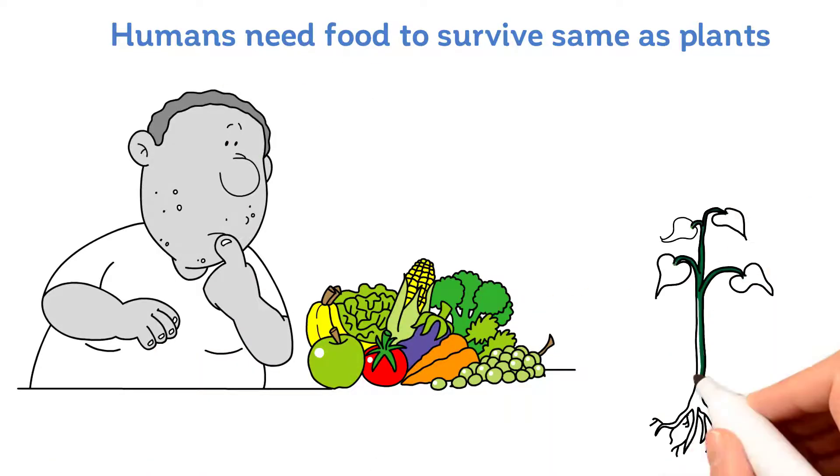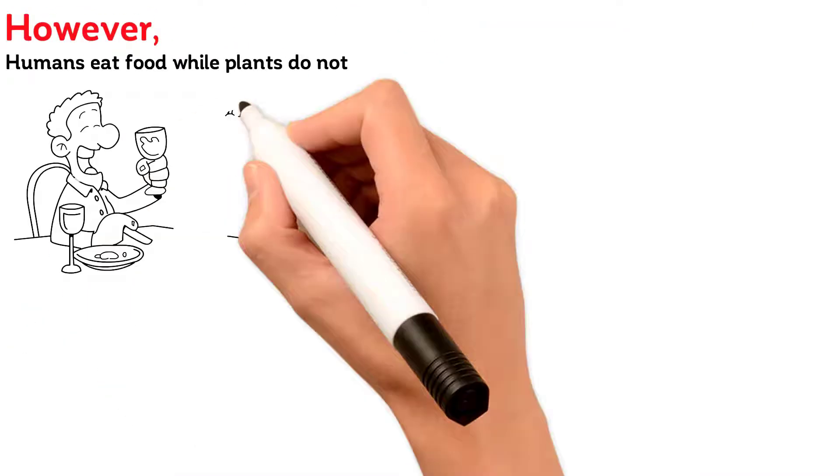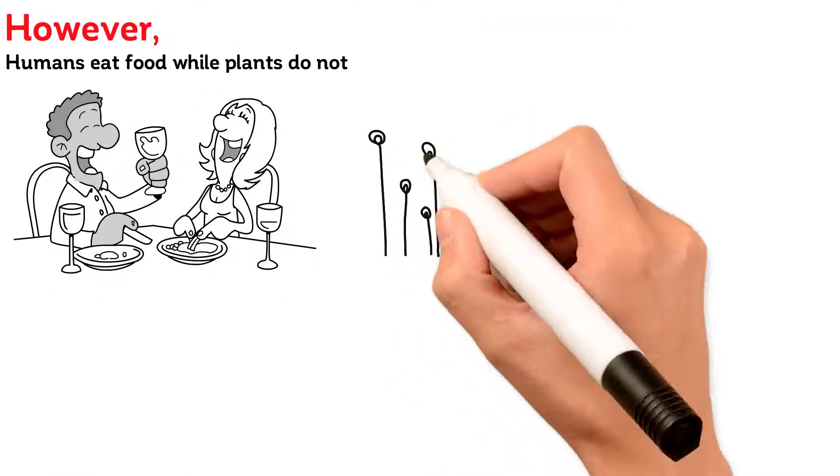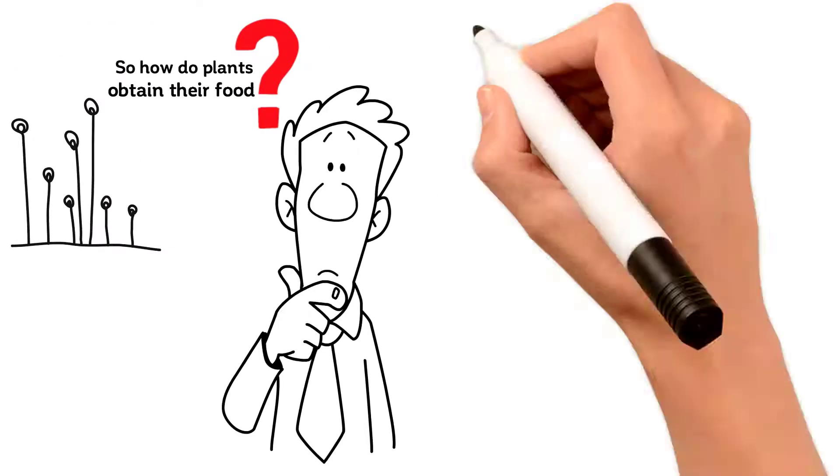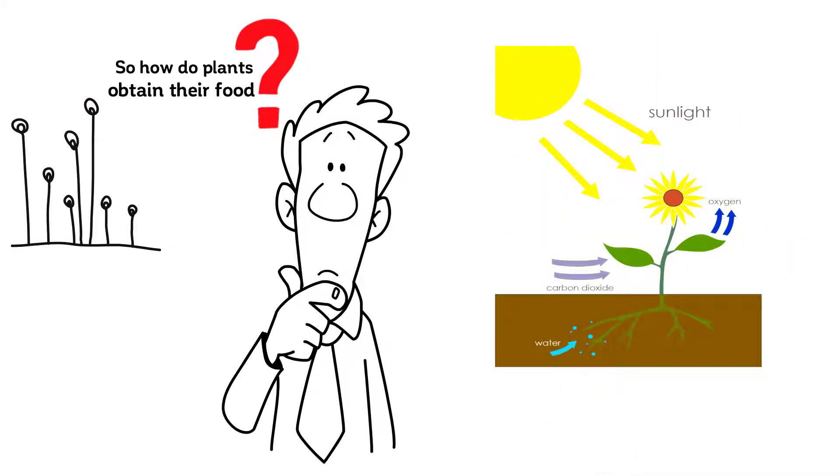Humans need food to survive, same as plants. However, humans eat food while plants do not. So how do plants obtain their food? They do so through a process called photosynthesis.